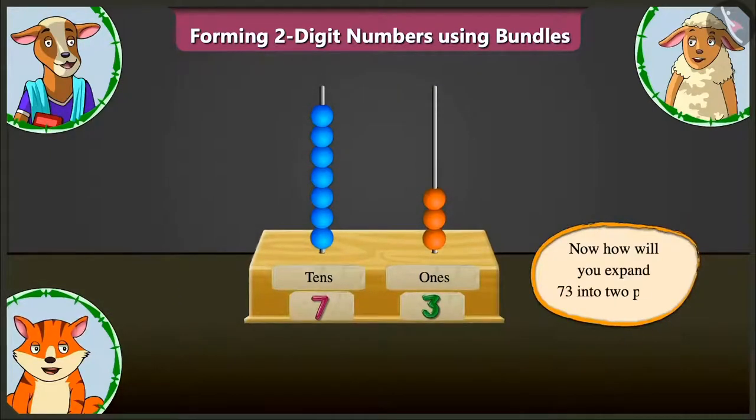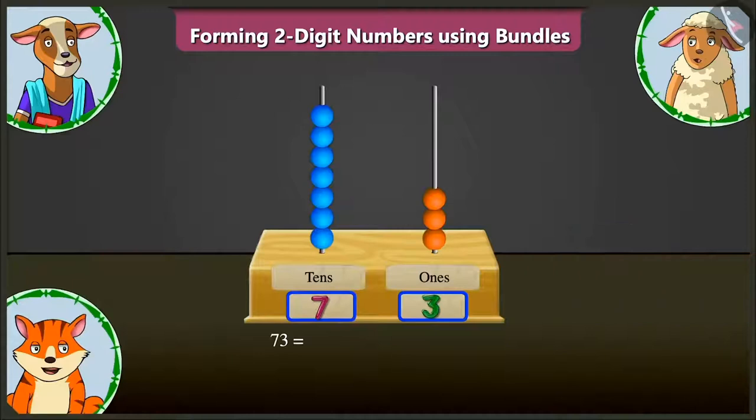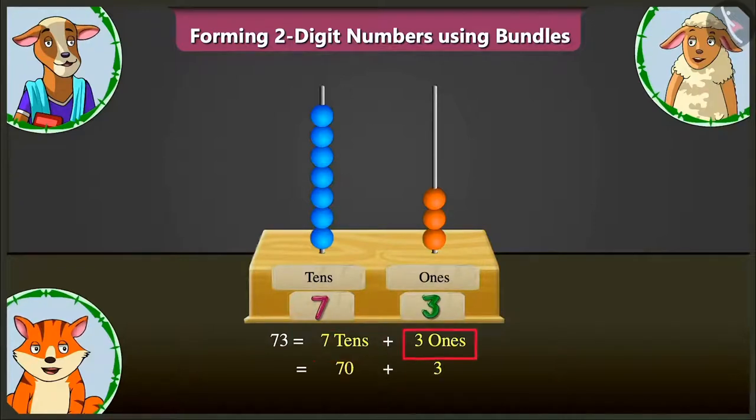Now, how will you expand seventy-three into two parts? Seventy-three means seven tens and three ones. Meaning, the two parts will be seventy and three.